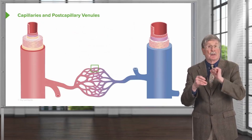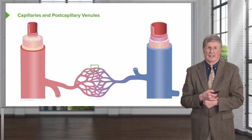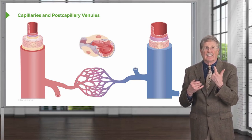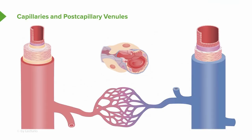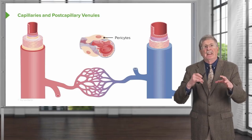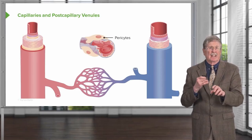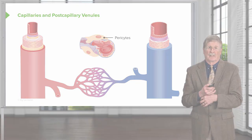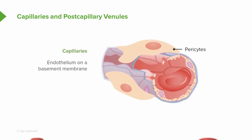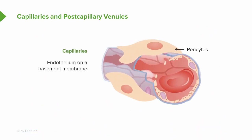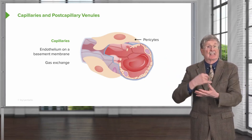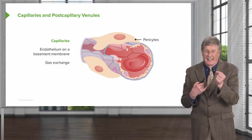Bridging between the arterial circulation and the venous circulation is the capillary circulation. Capillaries are simple tubes lined by a single endothelial cell sitting on a basement membrane. There are cells around the outside — kind of like fried eggs on the surface — called pericytes (P-E-R-I-cytes). These are smooth muscle-like cells that give some structure to the endothelium but are loosely arranged over the surface. The capillary is an endothelium on a basement membrane, and it's very thin-walled specifically so that we can get gas exchange.